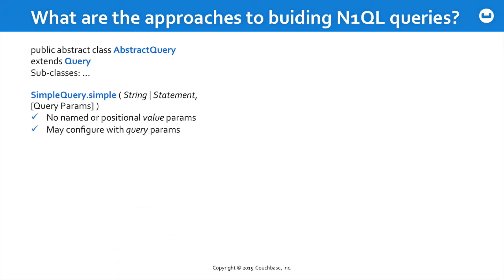First, there's the SimpleQuery class. It has a factory method that allows you to pass either a string, or what in the SDK is known as a Statement object, along with a set of query parameters. In this approach, there are no named or positional values injected into the statement. Rather, these query parameters configure the behavior of this particular query on the server.